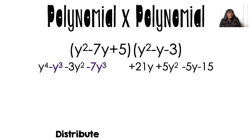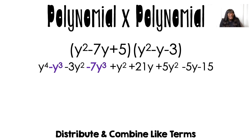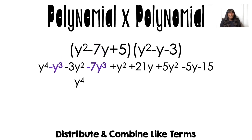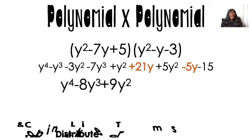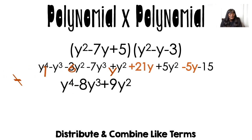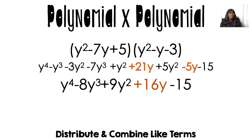Now we move to the second step — distribute and combine like terms. We want everything in descending order, biggest exponent to smallest. y to the fourth comes down first. Then the y cubed terms come together to give negative 8y cubed. Then I have three squared terms — negative 3, positive 7, and positive 5 — which combine to give 9y squared. Then the y terms: 21y minus 5y gives me 16y. And finally the constant, negative 15, which has no variable. That's our answer.